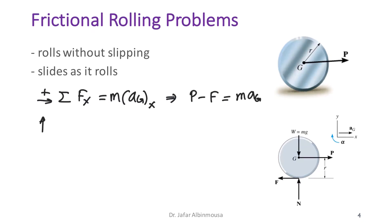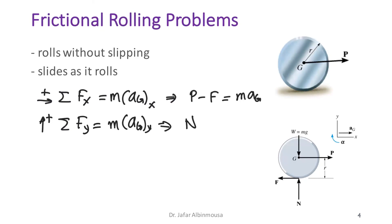Taking upward as positive and summing forces along y, we get N minus mg equals zero.